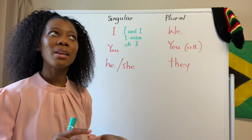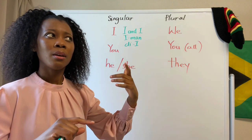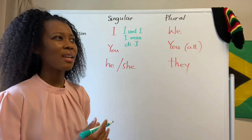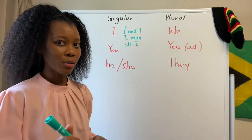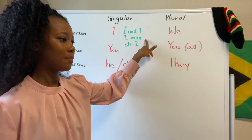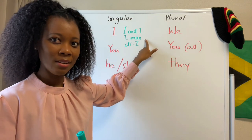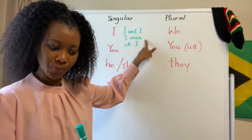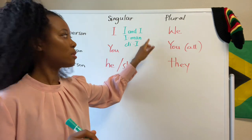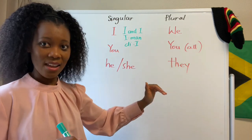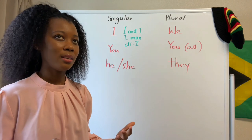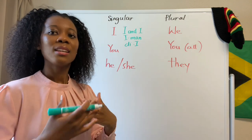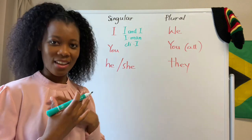Now, 'Iman' may be a masculine term, so maybe only males would use that. I'm not entirely sure — asterisk on that. But these are the three ways: I and I, Iman, The I. You'll hear these when they're speaking to each other — they refer to themselves as I and I, Iman, or The I.